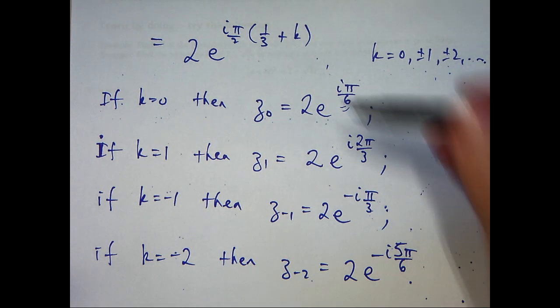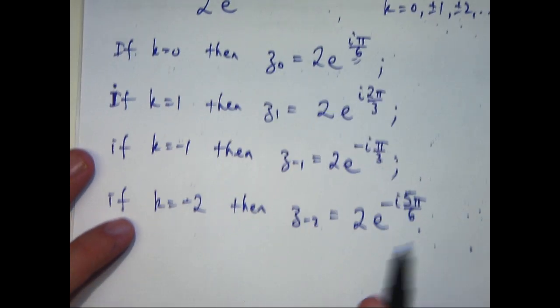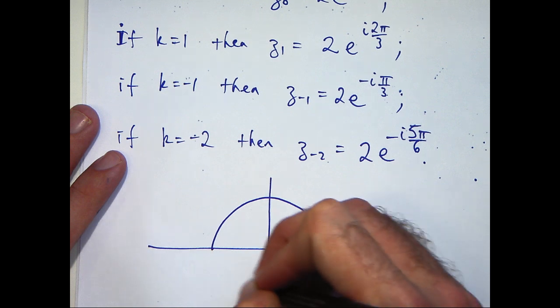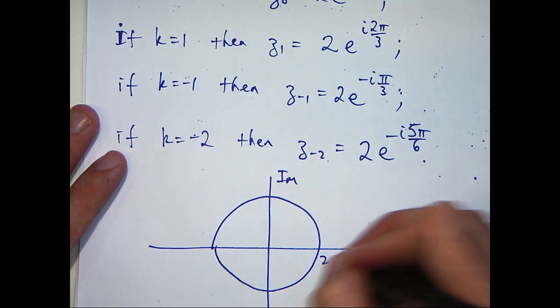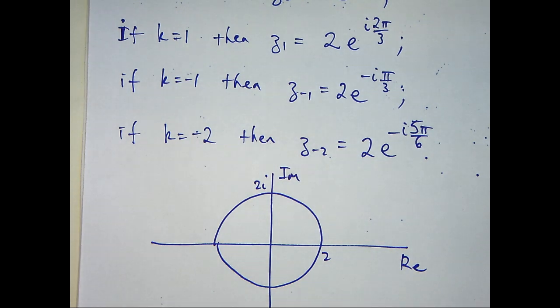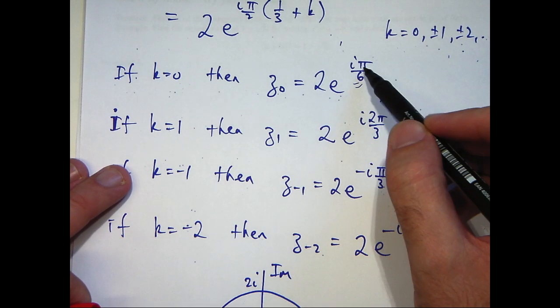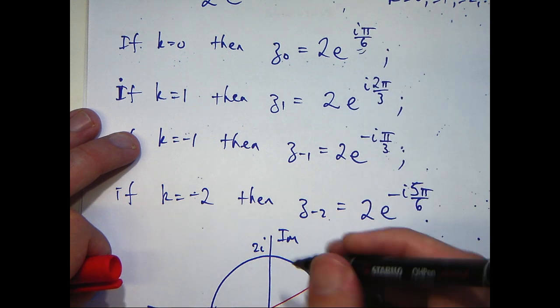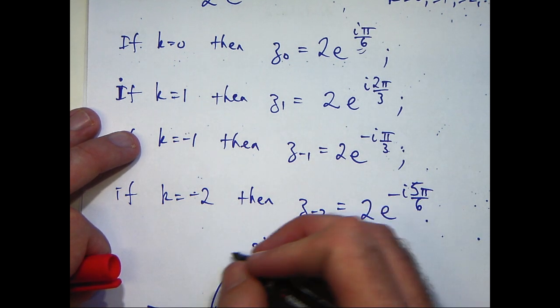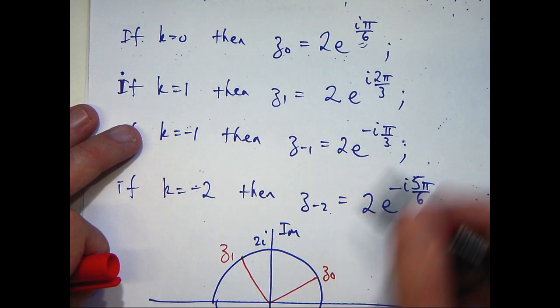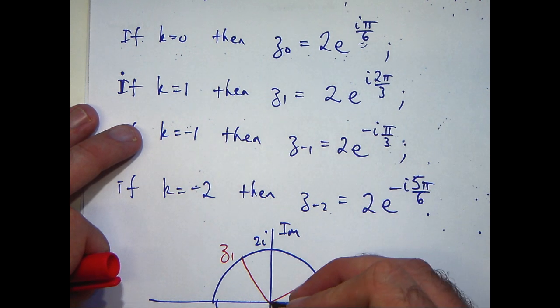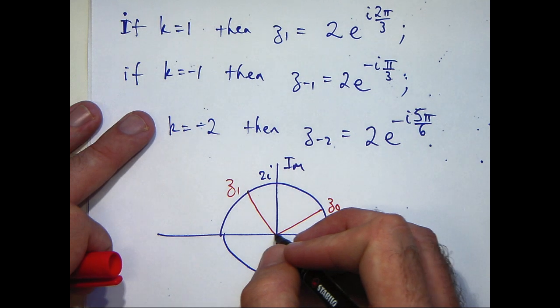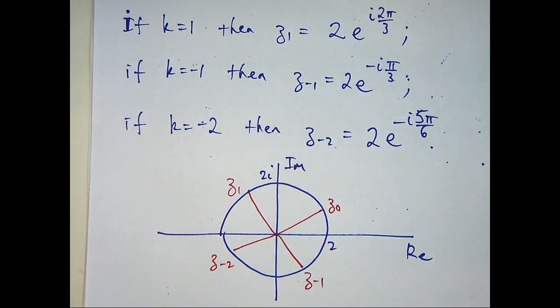What I'm going to do now is just plot these complex numbers on a diagram. We're not asked to do that, but I think it's important. So I'm going out 2 units and I'm going to plot my various solutions. I'll go out 2 units and rotate anti-clockwise pi on 6 radians, that would be z0. Then I go out 2 units and rotate 2 pi on 3 radians. I rotate pi on 3 in the clockwise direction to get z minus 1 and keep on going to get z minus 2.